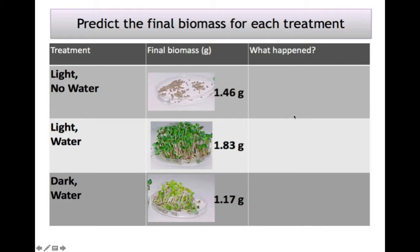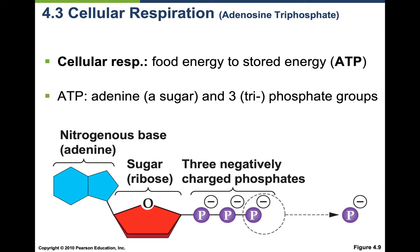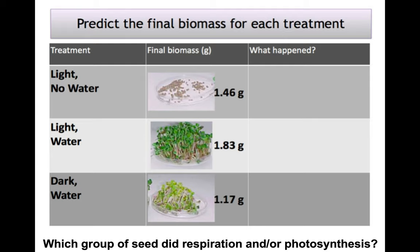Think about these results specifically in terms of photosynthesis and respiration. With no light and no water, was the plant able to do photosynthesis? With light and water, was it able to do both photosynthesis and respiration? In dark and water, was it able to do both? Figure out which treatment did respiration and photosynthesis, which did only one, and which did neither.